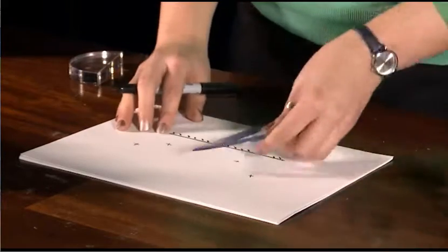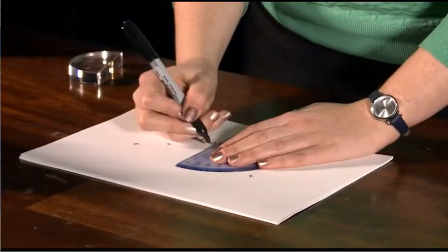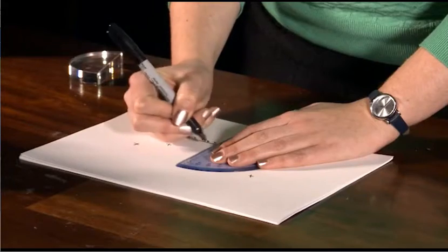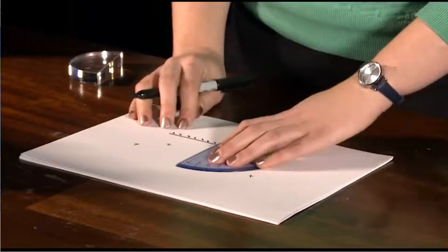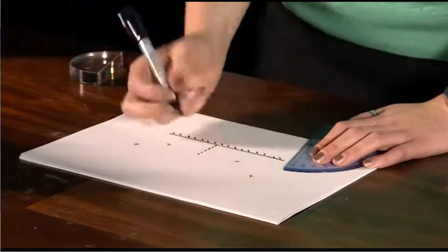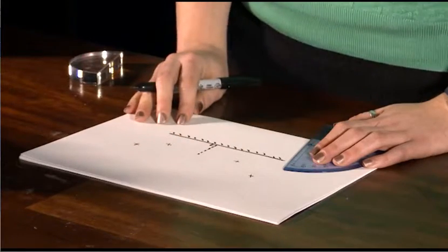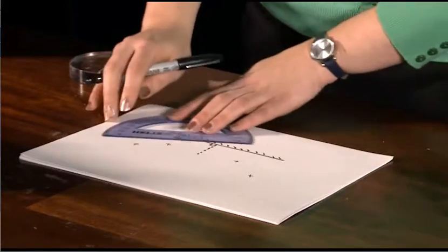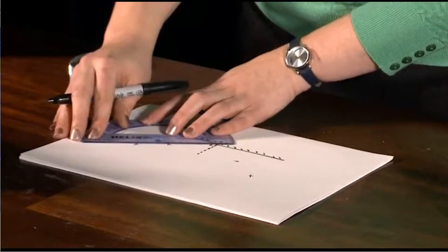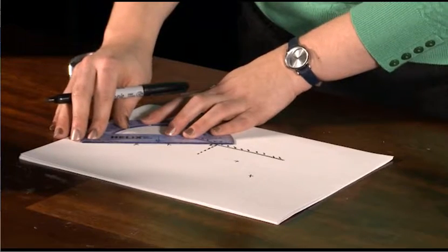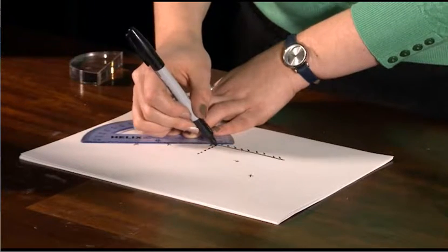Next, I'm going to use a ruler to fill in my normal—that's the perpendicular line at right angles to the mirror where the light hits it. Finally, I'm going to fill in my rays of light by joining up those crosses with the point at the mirror.